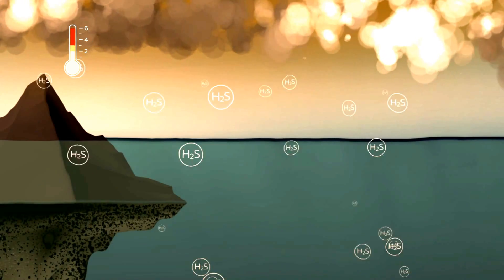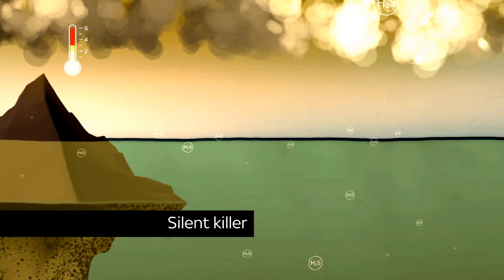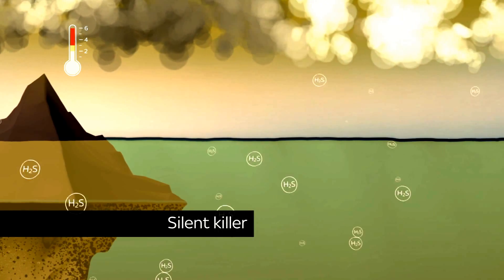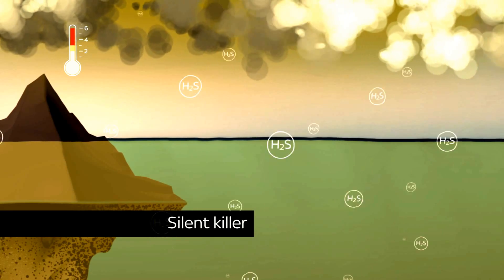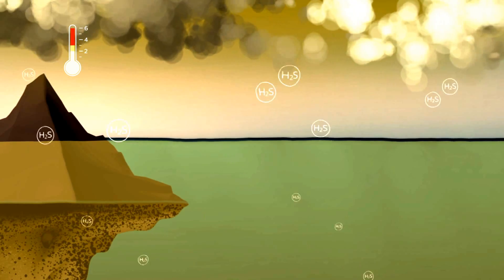Hydrogen sulphide thrives in the stagnant oceans. It is devastating for marine life, and in the atmosphere it poisons trees, animals and humans.